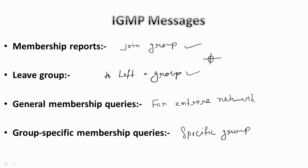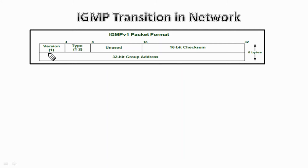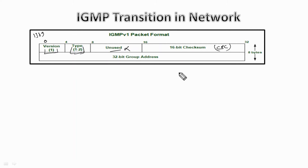Let's look into the IGMP packet format. IGMP version 1 was developed in 1989 at Stanford University. Its packet format includes the version field set to 0, the type field — 1 for host membership query and membership report — an unused 8-bit section of zeros, a checksum which is the one's complement of the sum of the IGMP message for error checking, and a group address field which is 0 when sent and ignored when received in membership query messages, but takes the IP host group address of the group being reported in a membership report message.